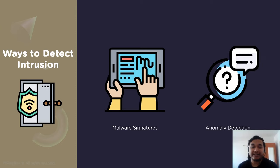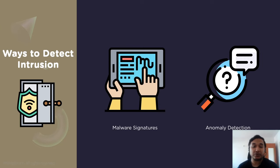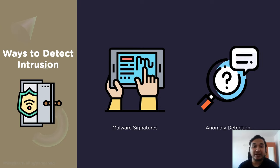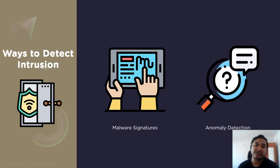Anomaly-based intrusion detection is the opposite — it's designed to pinpoint unknown attacks, such as new malware, and adapt to them on the fly using machine learning. Machine learning techniques enable an IDS to create baselines of trustworthy activity, known as a trust model, then compare new behaviors against it. False alarms can occur with anomaly-based IDS since previously unknown yet legitimate network traffic could be falsely identified as malicious activity.